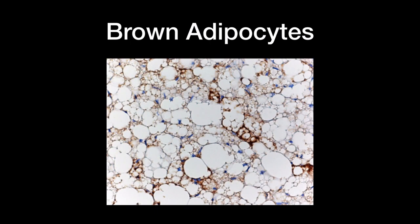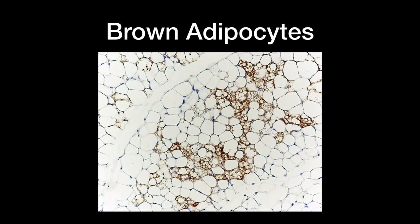The other type of adipocyte is the brown adipocyte. When we are first born, we have a decent amount of brown fat, but as adults we more or less lose it. Brown fat appears brown under the microscope because the cells contain many mitochondria within the cytoplasm. You can see the lipid droplets and that the cytoplasm of the adipocyte is brown. The lipid droplets are also slightly darker than those in white adipocytes.